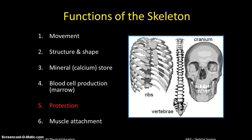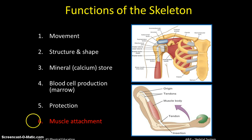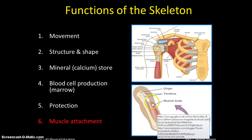You gave the example of the sternum for protection, which is great. The ribs obviously contribute to that as well. The vertebrae protect the spinal column, and the cranium protects your brain. Lastly, one of the things the skeleton does is enable movement — we obviously need muscles to attach to bones in order to make movements over joints. The scapula is actually sort of freestanding in your body, and there's an awful lot of musculature that attaches to that big flat bone, creating movements like elevation and depression.